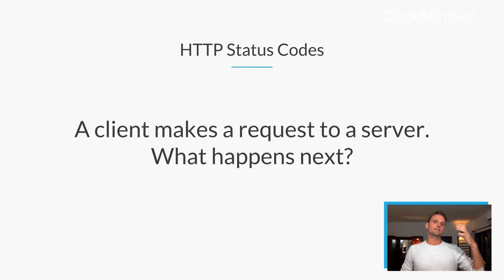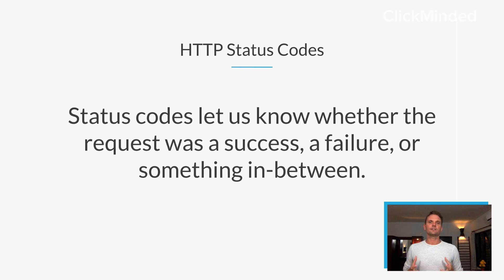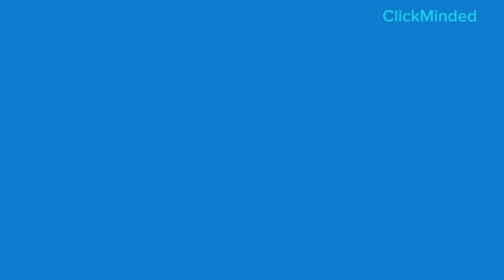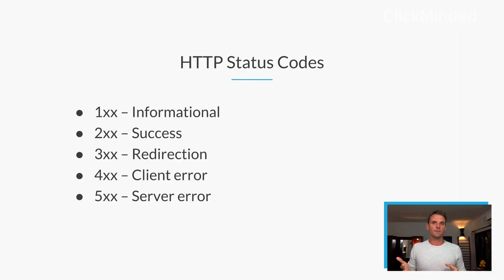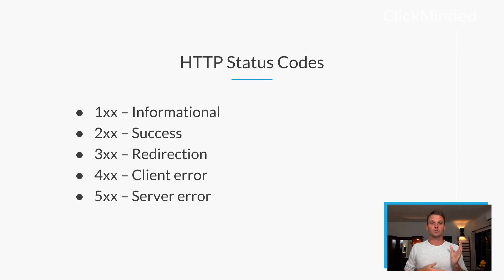A client makes a request to the server — what happens next? Status codes let us know whether the request was a success, a failure, or something in between. That's what an HTTP status code is. The 100 block are informational requests. The 200 block are successful requests. The 300 block are for redirects. The 400 block will be for client errors, and the 500 block will be for server errors.